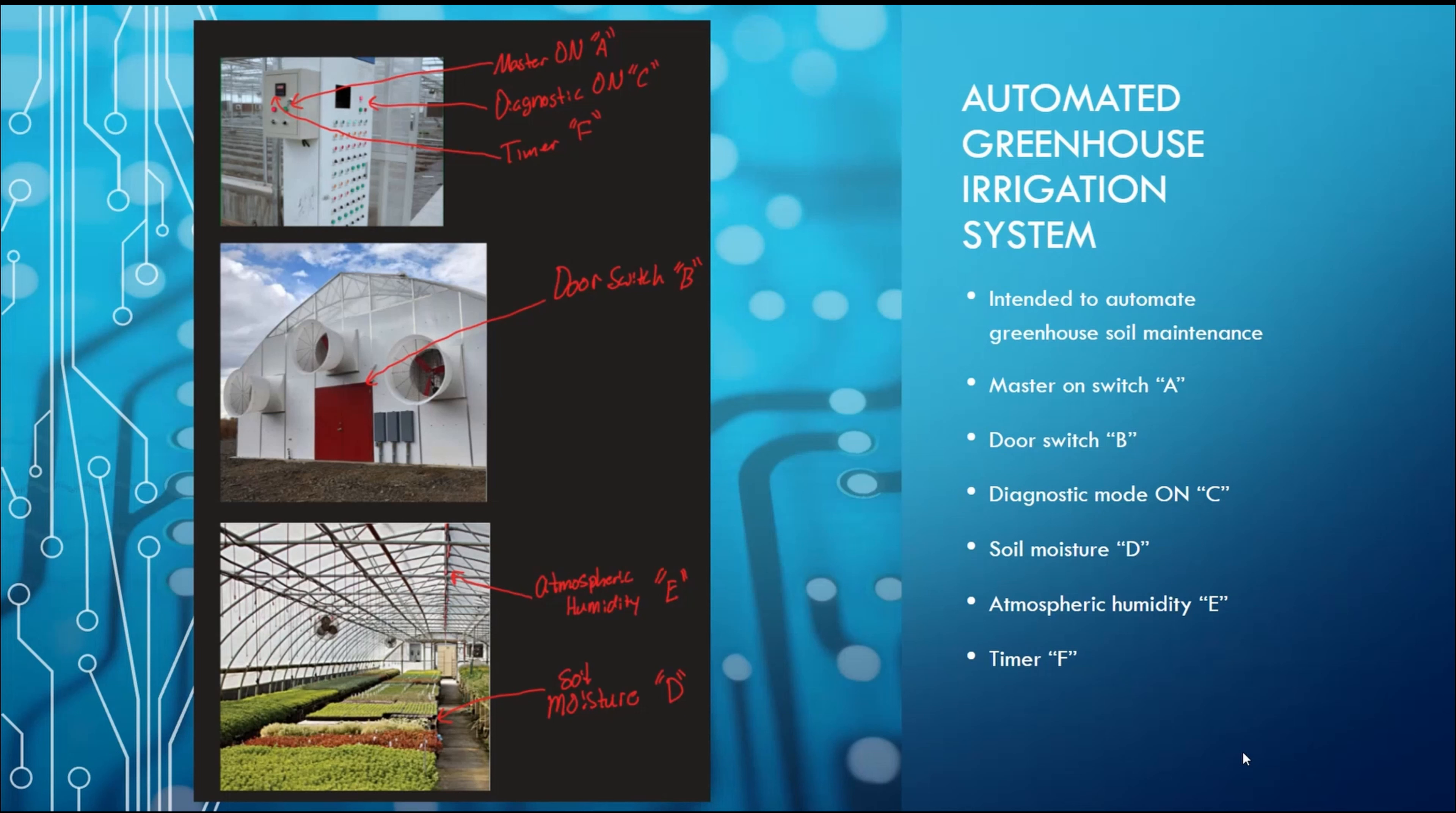As with any real-world system, there will be failures or faults throughout time. In the event of a suspected leaking or clogged sprinkler head, we have implemented a diagnostic on feature, input C. When enabled, the diagnostic on mode will allow us to force the irrigation system on and physically monitor the hardware components.